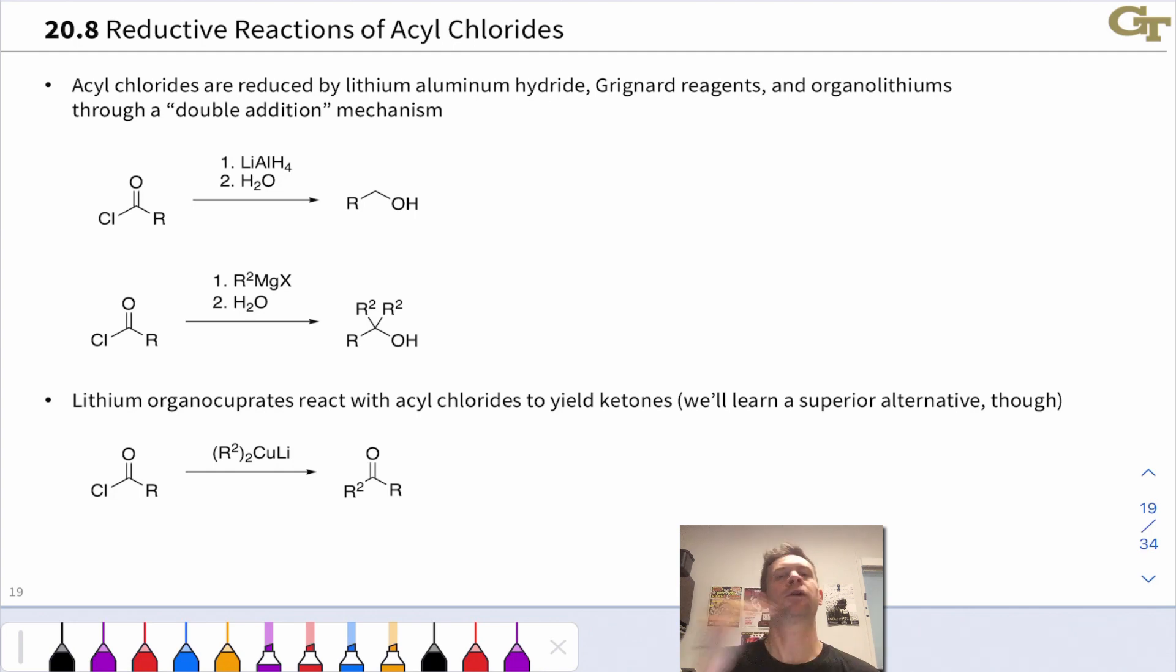Because they are so oxidized, they're amenable to reduction. This slide surveys some reductive reactions of acyl chlorides in which the product is more reduced than the starting acyl chloride.